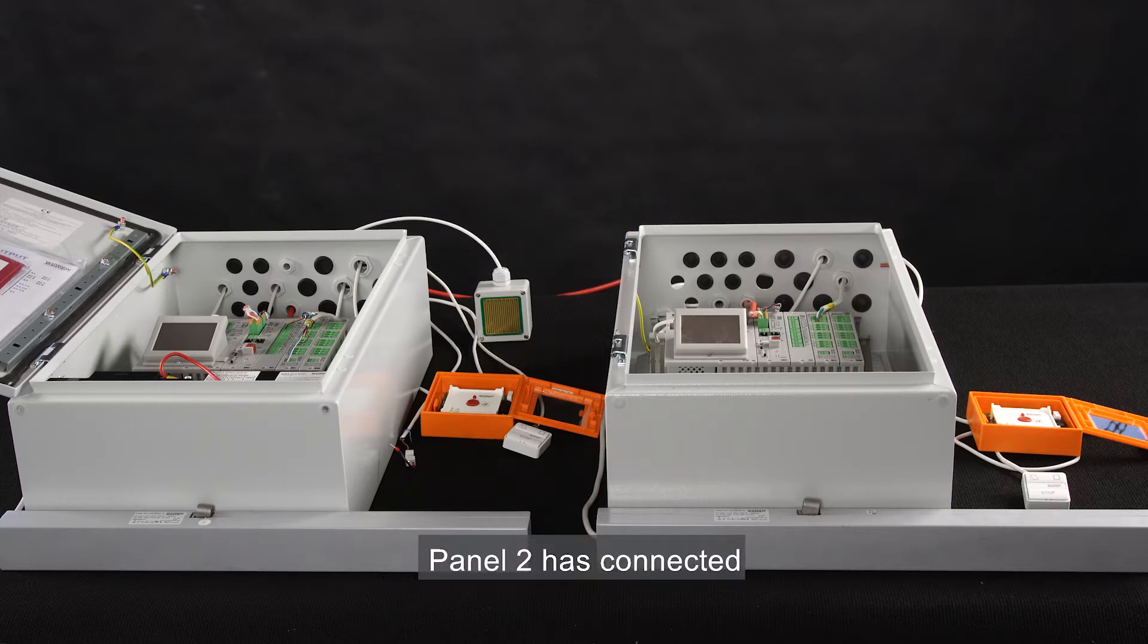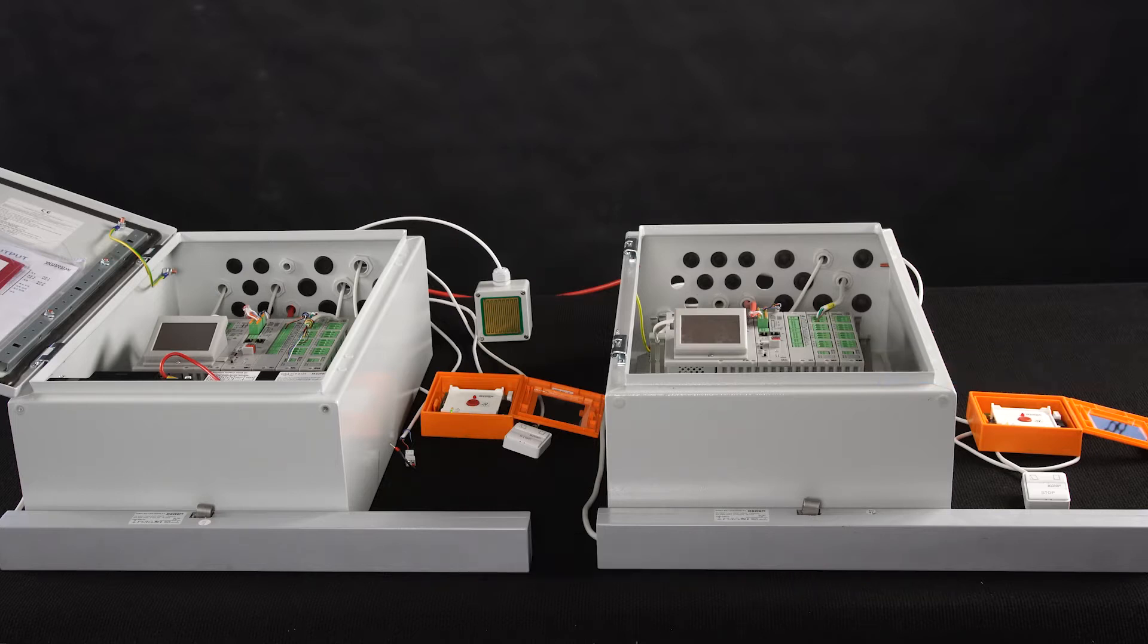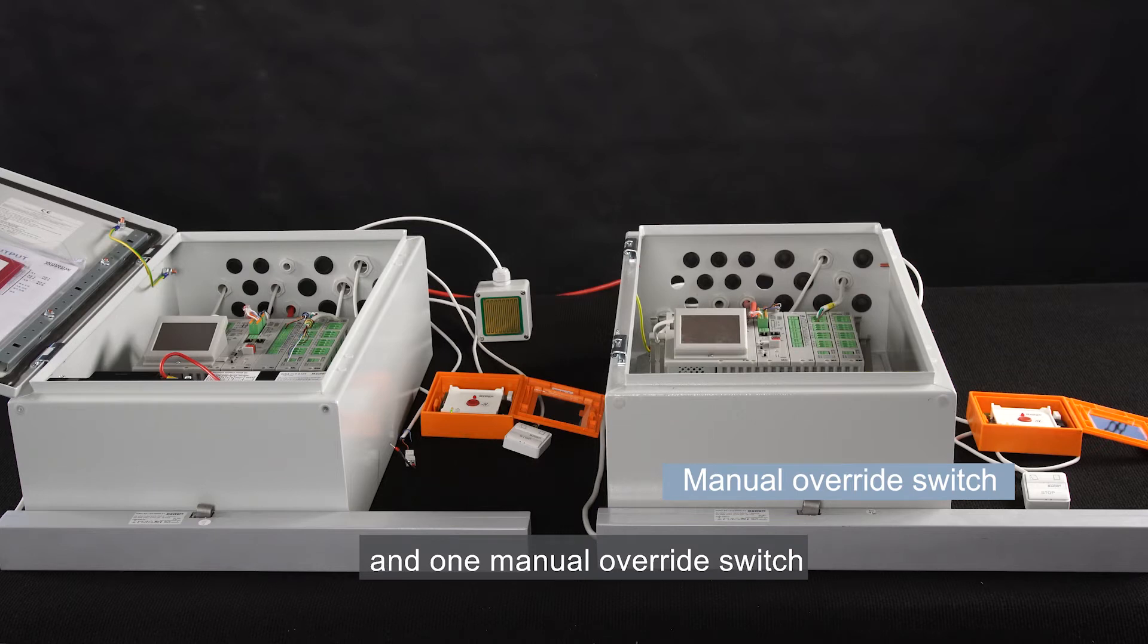Panel 2 has connected one actuator, one brake glass unit, and one manual override switch.